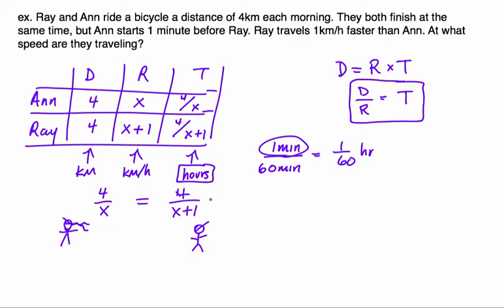I'm going to add it to Ray's time, and I'm going to say that Ann's time would equal Ray's time if I added 1 minute, 1/60th of an hour, to Ray's time. Now I have to go and solve this.